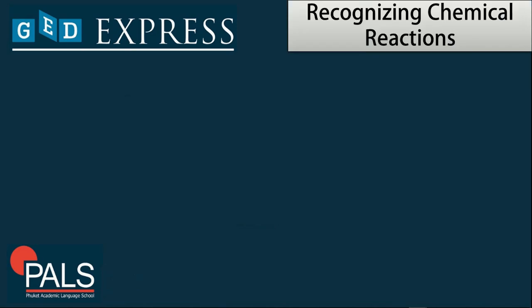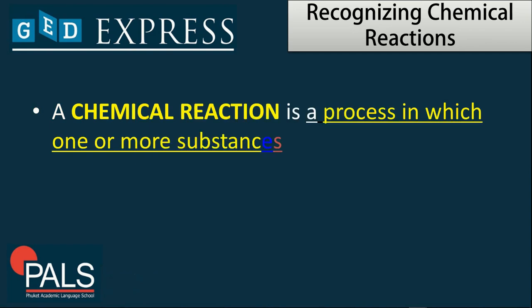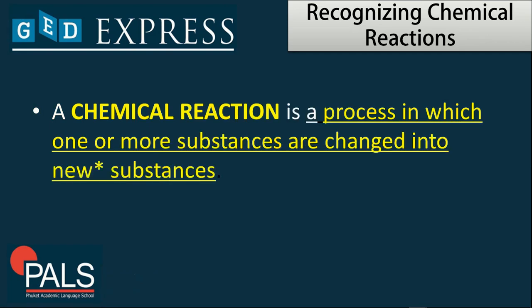In recognizing chemical reaction, a chemical reaction is mainly a process in which one or more substances are changed into new substances. New simply means substance that was not there before the reaction. So you have sets of reactants combined together or fused together to produce a new product.